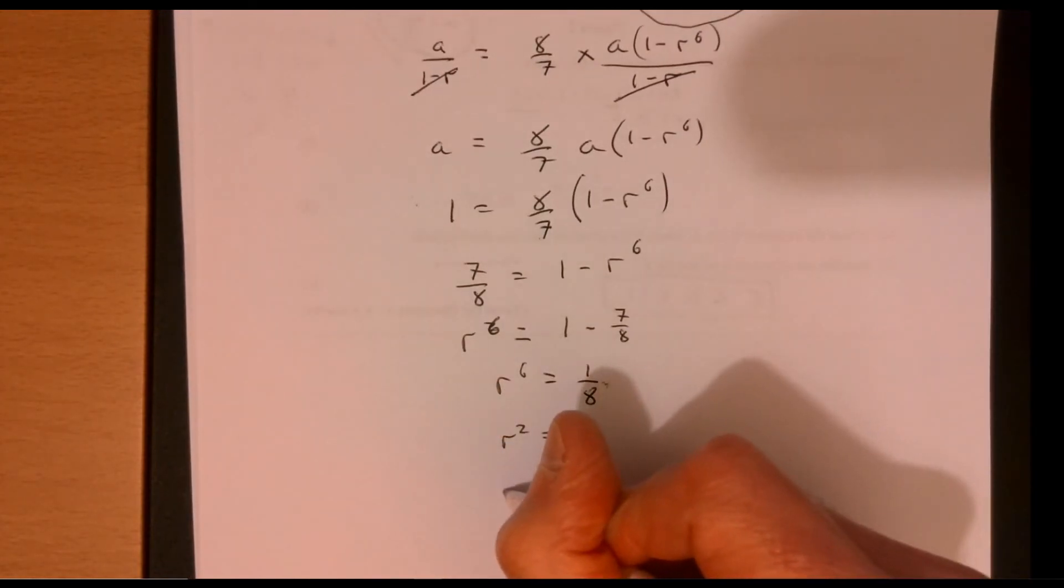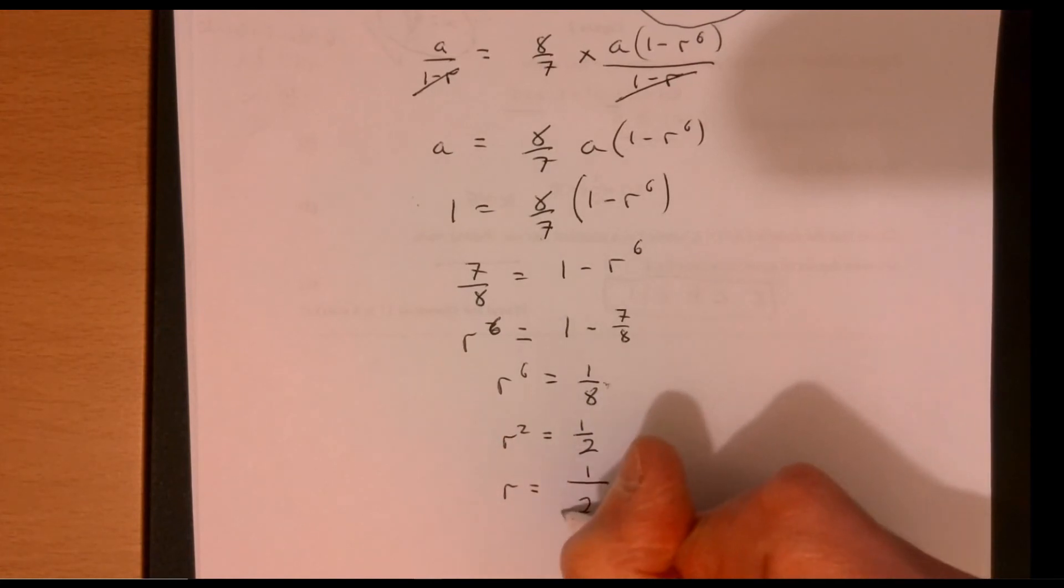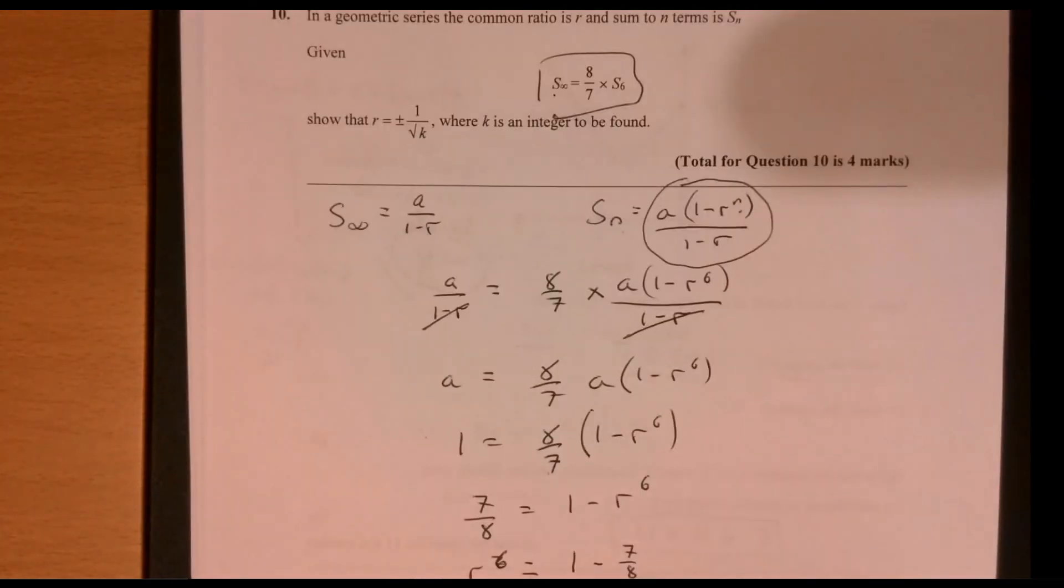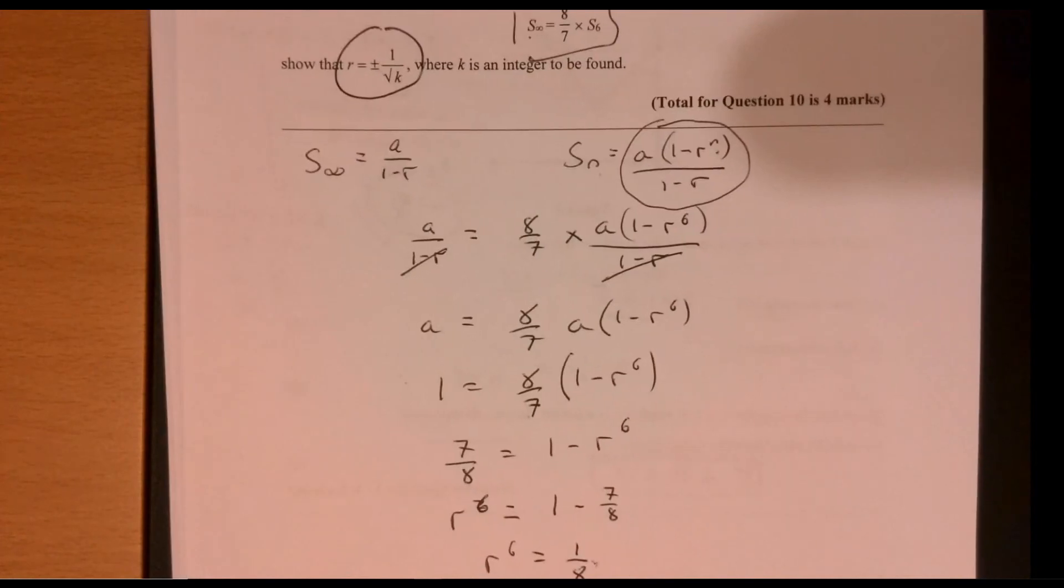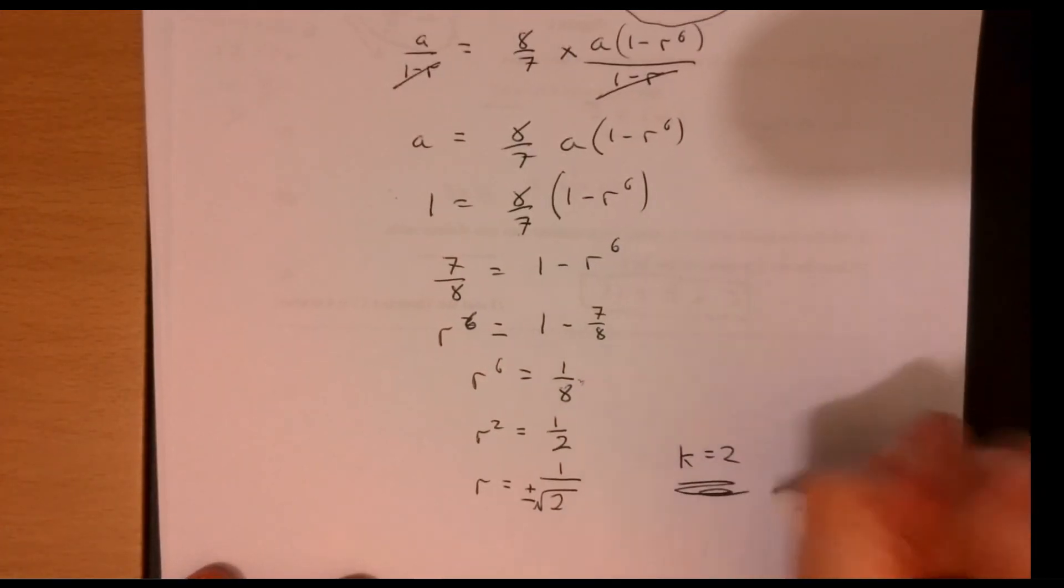And then if I square root both sides, I'm going to get plus minus just there. So if we look at the question, hooray, look, we've got it in the form that we want. So K is equal to 2.